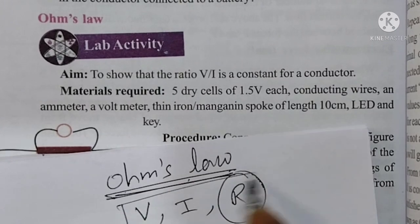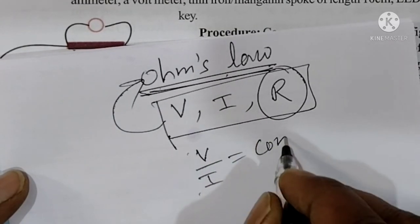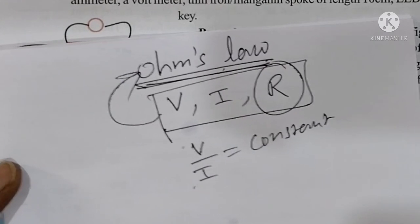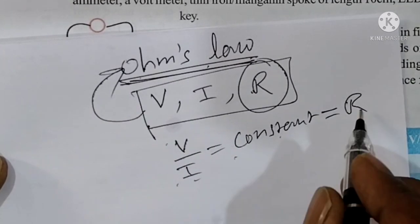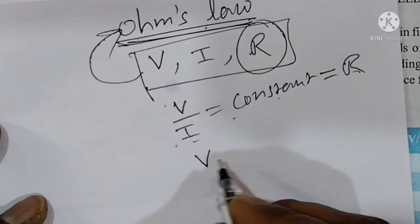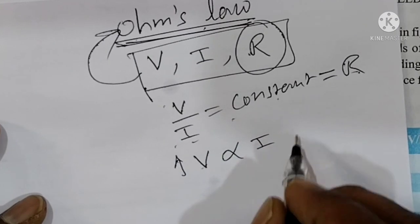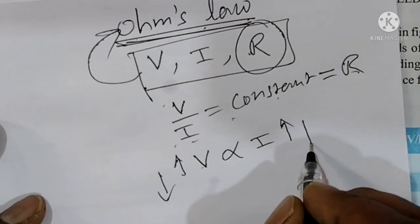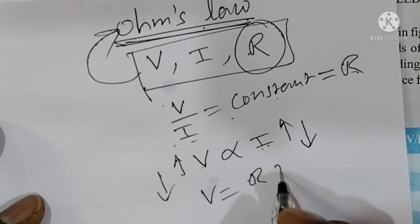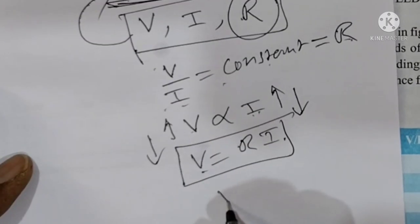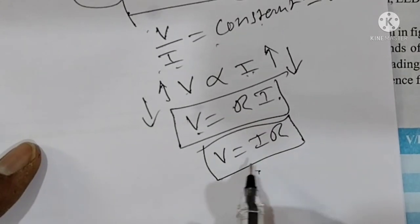So, what do we call Ohm's Law? The relation V by I is constant. V by I is constant, and that constant is R. So V by I is equal to R. V is proportional to I when temperature is constant. Therefore, V is equal to some constant into I, which gives us V is equal to IR. This is the formula.